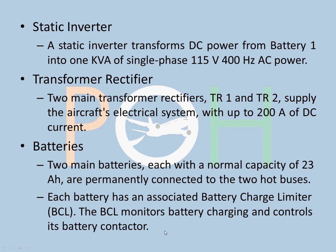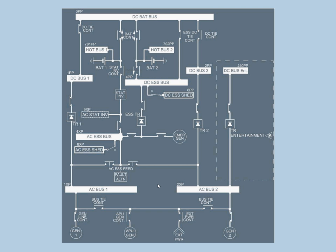Static inverter: the static inverter transforms DC power from battery 1 into 1 kVA of single-phase, 115 volt, 400 Hz AC power. In case of failures, batteries hold DC power, and the static inverter converts that DC from the batteries back into AC power for components that require AC current.